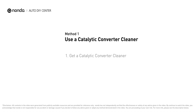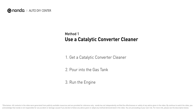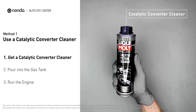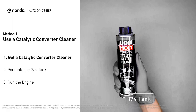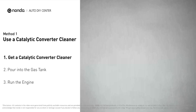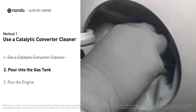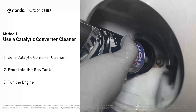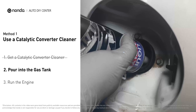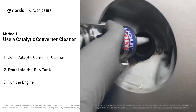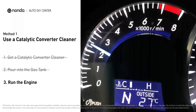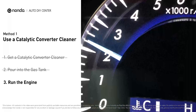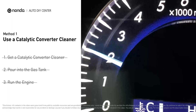Method 1: Use a catalytic converter cleaner. There are many different kinds of converter cleaner, normally all under $20. Reduce the fuel level in your car to about one-fourth of a tank, then simply pour the cleaner into the gas tank. The fluid mixes with the gasoline, acts on the buildup in the catalytic converter, breaking it down and cleaning it. Then drive your car for 150 miles, or run the engine at about 2500 RPMs for 30 minutes to run the cleaner through.